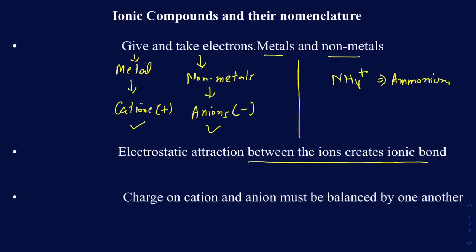The bottom line is you have to have a cation and anion. Not all cations come from metals — the ammonium ion only contains non-metals, but it's still a cation, so it can still make ionic compounds. Keep that in mind.